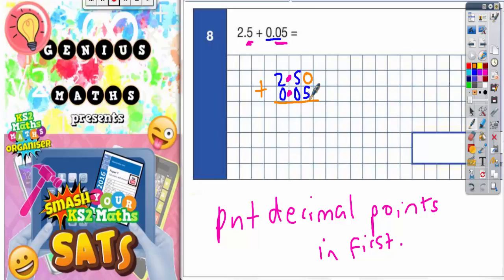So 0 plus 5 is 5. 5 plus 0 is 5 again. And 2 plus 0 is 2. Don't forget your decimal point. That's going to be going there, because your decimal points need to be lined up. So your final answer is 2.55.